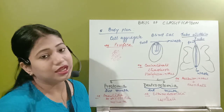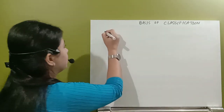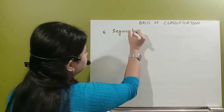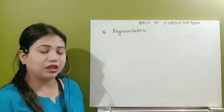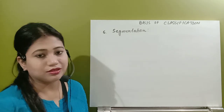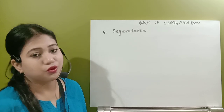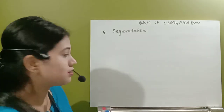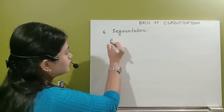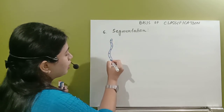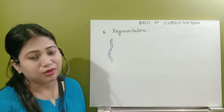Now let's see the next basis of classification, which is segmentation. What is segmentation? You have seen in the environment that lots of organisms have some body parts or divisions. Externally it is visible in some organisms. They are known as segments, and this phenomenon is known as segmentation.